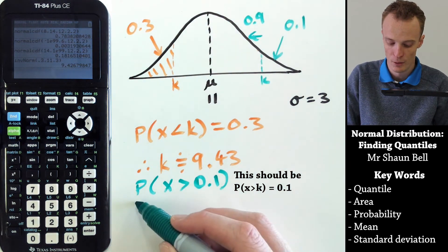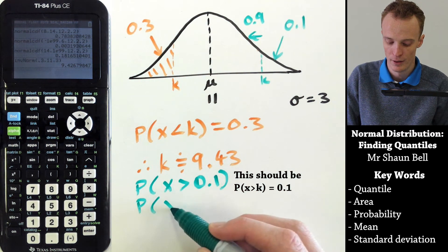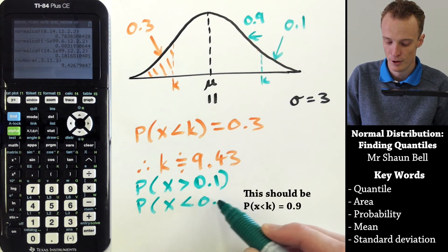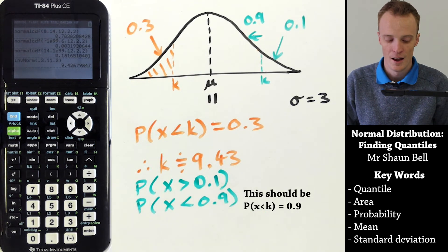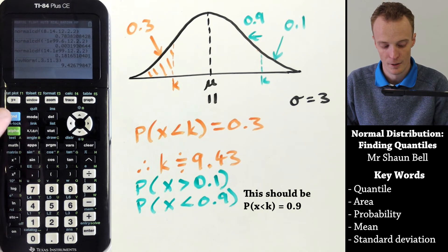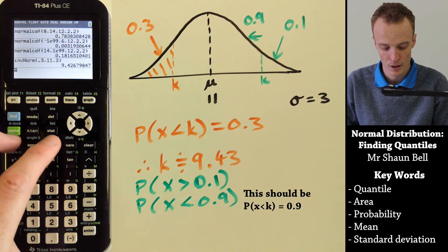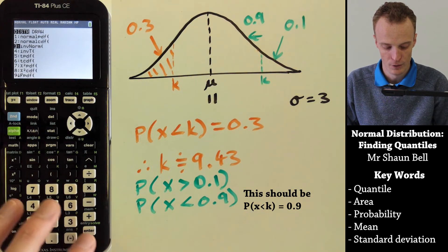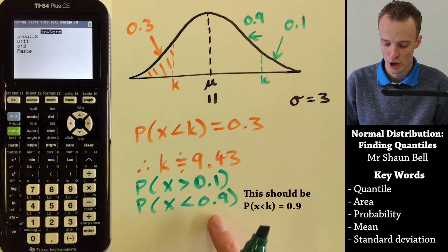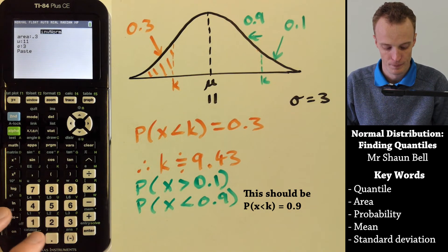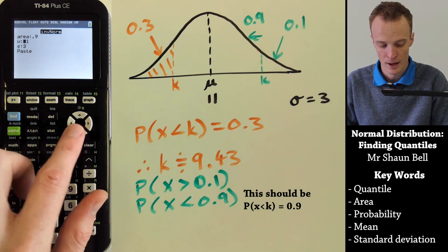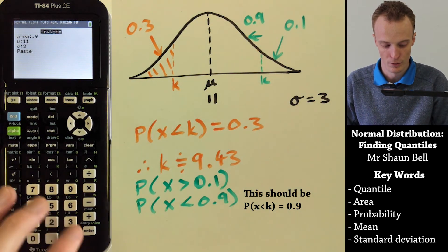So essentially, we're trying to find the K value where the probability that X is less than K is 0.9. When we enter that into our calculator, we go to second, distribution, and inverse norm. Our area has changed to 0.9. Our mean is still 11 and our standard deviation is still 3.